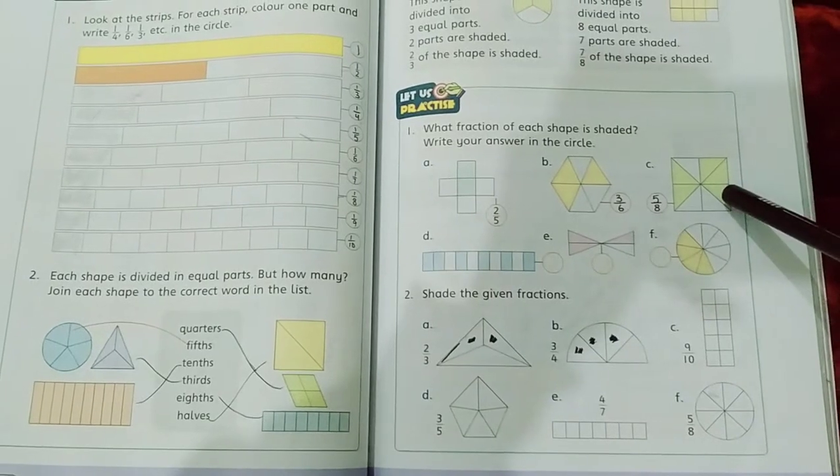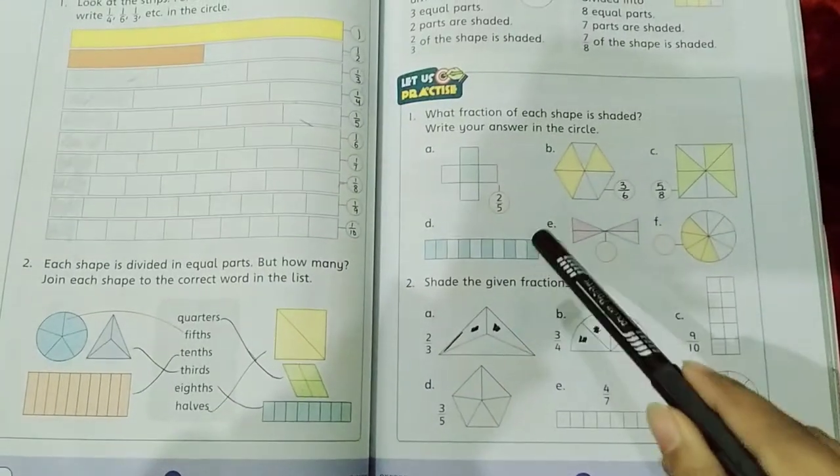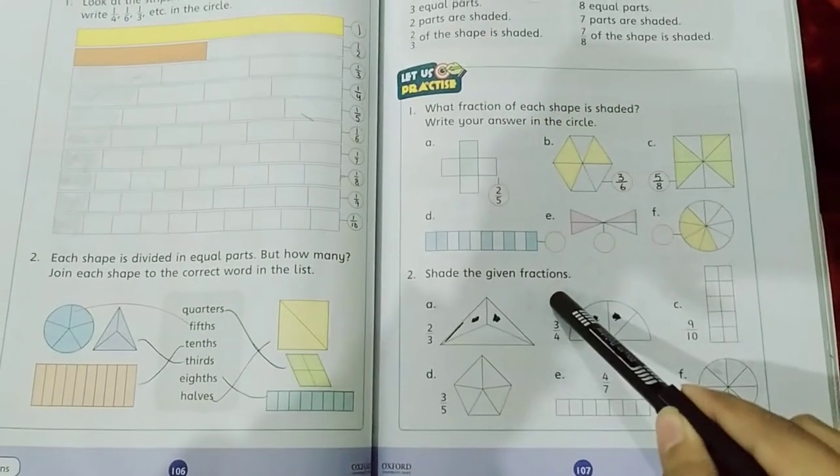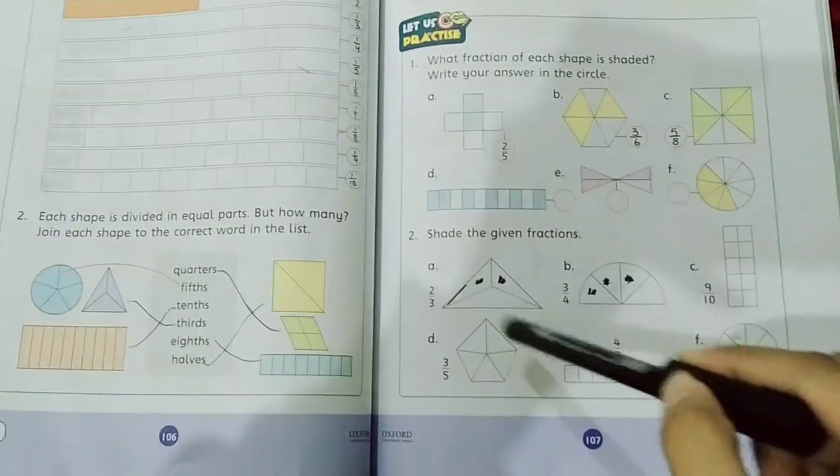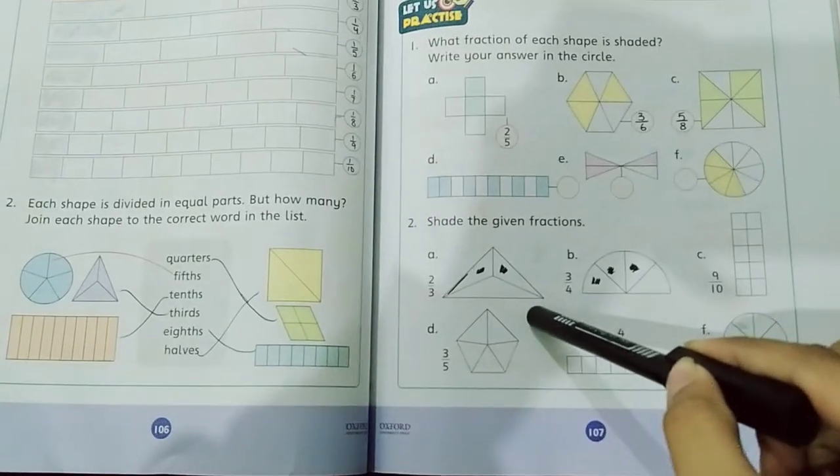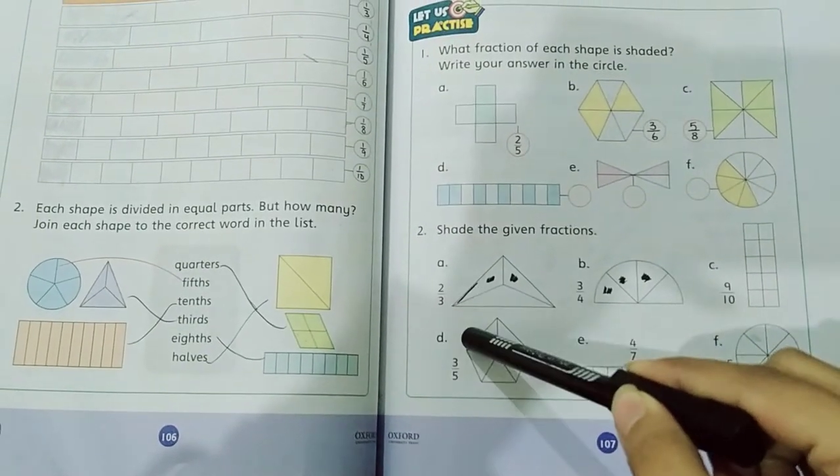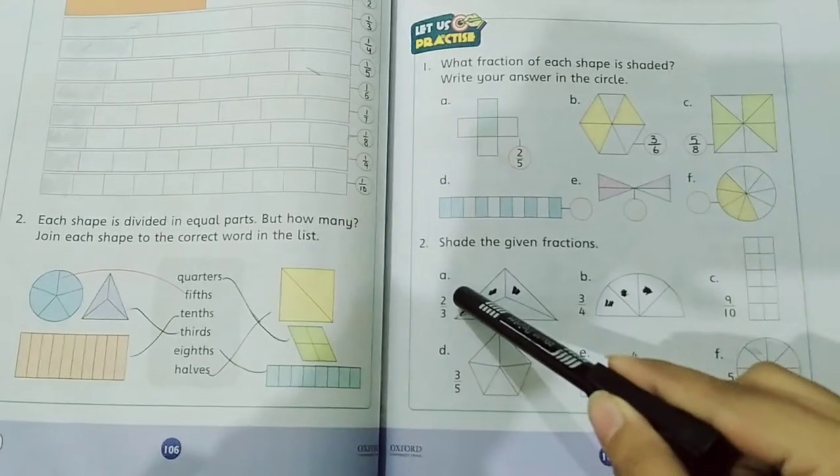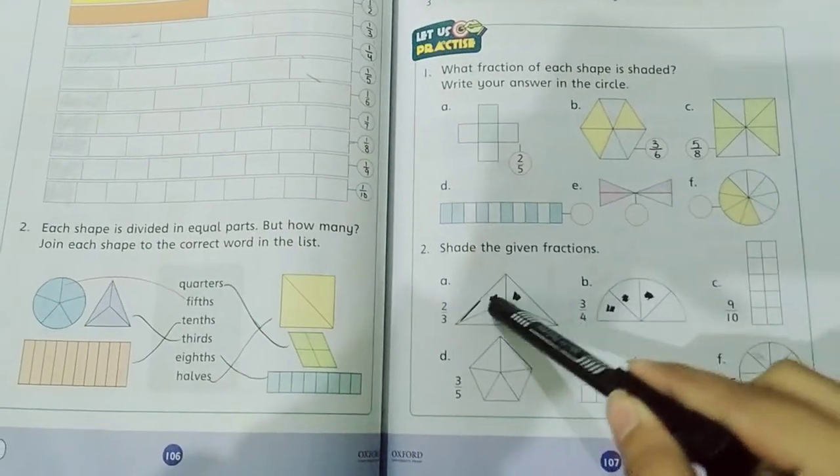So 5 by 8 as it is D, E, and F. Now question number 2: shade the given fractions. Now we say that the fractions are not so you have to shade it now. 2 by 3 means that 3 are total, we have to shade it now.